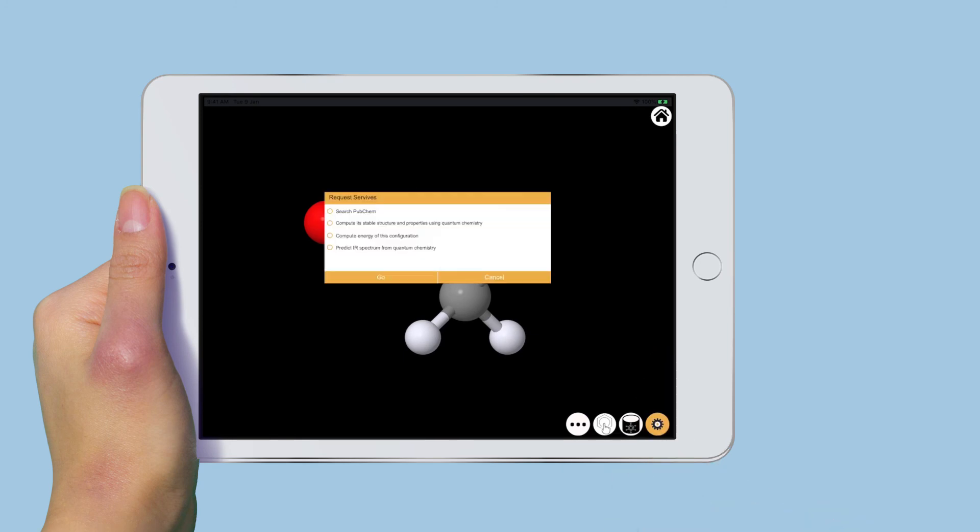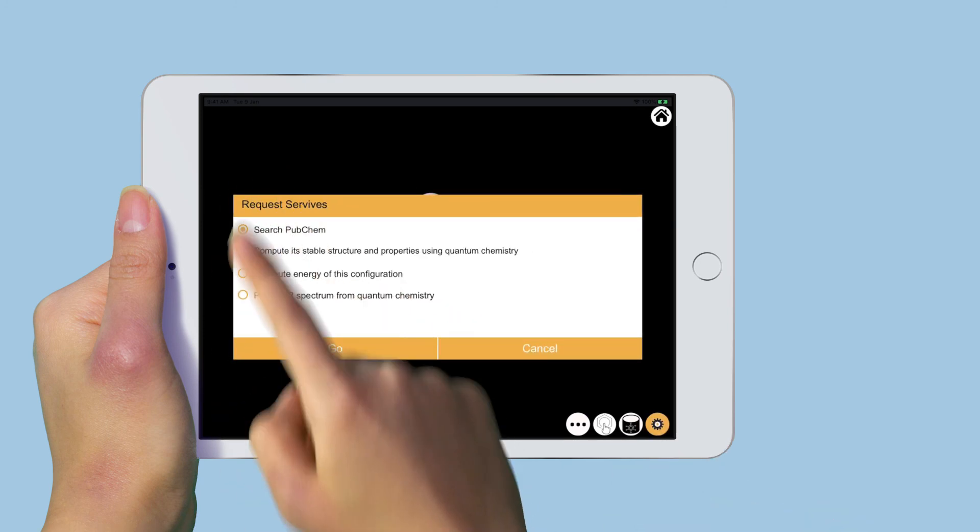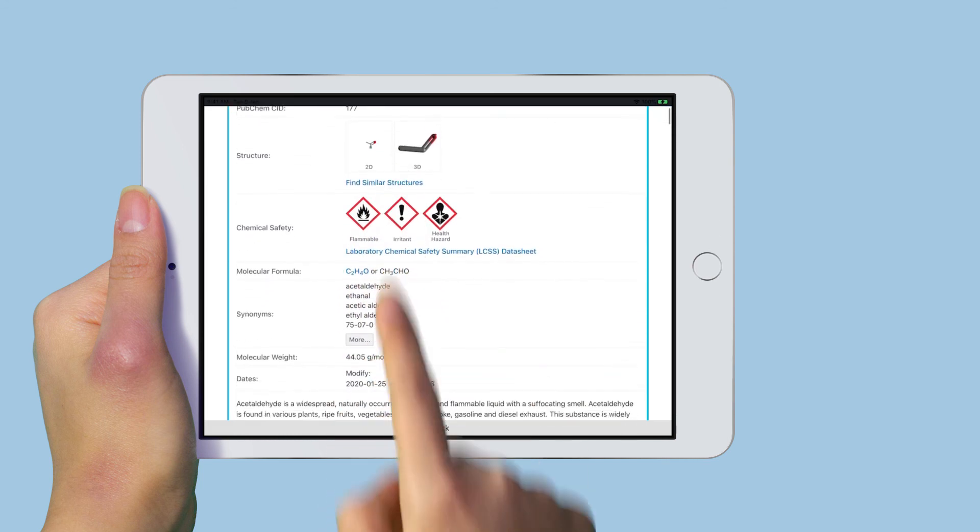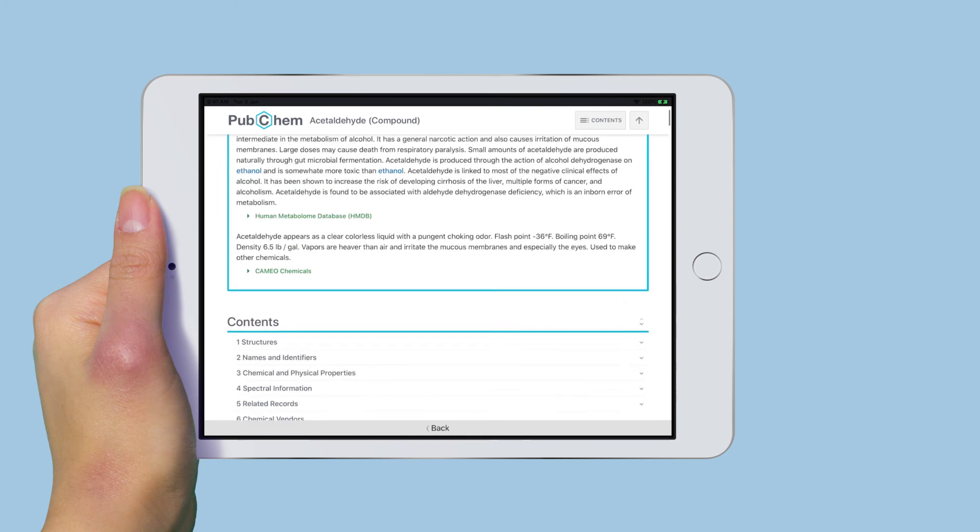Now let's search for available chemical information for this molecule on PubChem. This will open a new page to show the result page from the PubChem database. Scroll down to view different data.